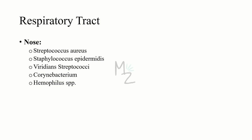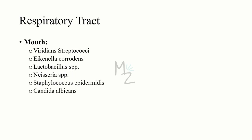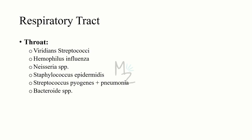Respiratory tract. Nose includes Staphylococcus aureus, Staphylococcus epidermidis, viridans streptococci, Corynebacterium, and Haemophilus species. Mouth includes viridans streptococci, Actinomyces, Lactobacillus, and Neisseria species, along with Staphylococcus epidermidis and Candida albicans. The normal flora of the throat includes viridans streptococci, Haemophilus influenzae, Neisseria species, Staphylococcus epidermidis, Streptococcus pyogenes and pneumoniae, along with Bacteroides species.